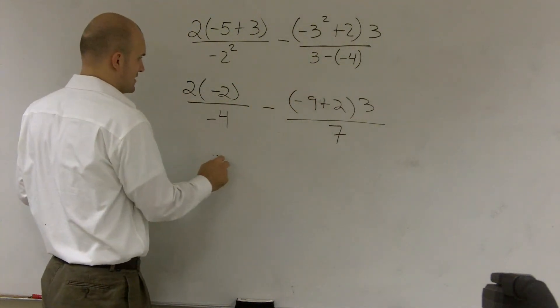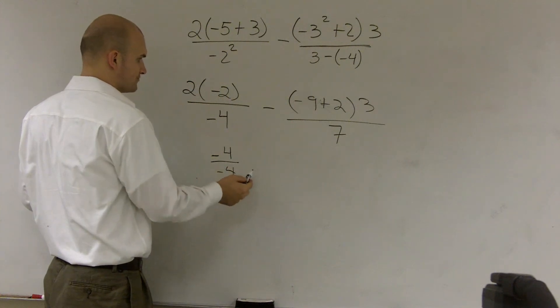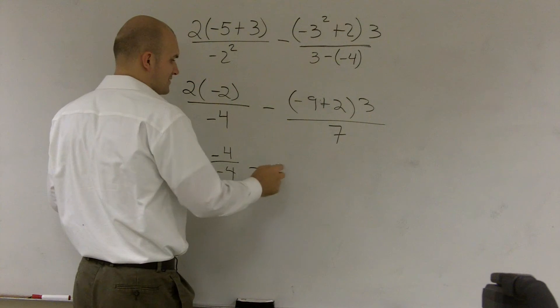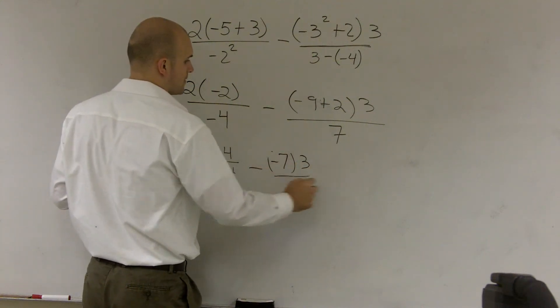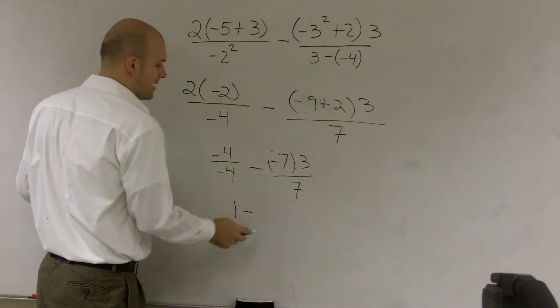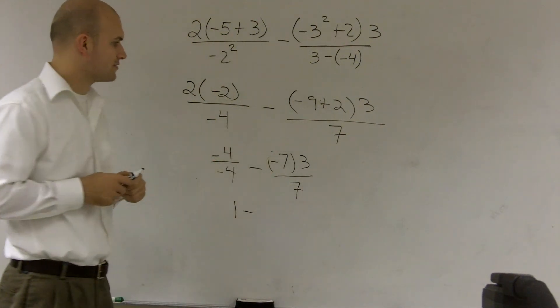So this becomes a negative 4 over a negative 4, minus negative 9 plus 2 is a negative 7 times 3 over 7. Well, negative 4 divided by 4 is 1, minus negative 7 divided by 3 is a negative 21 over 7.